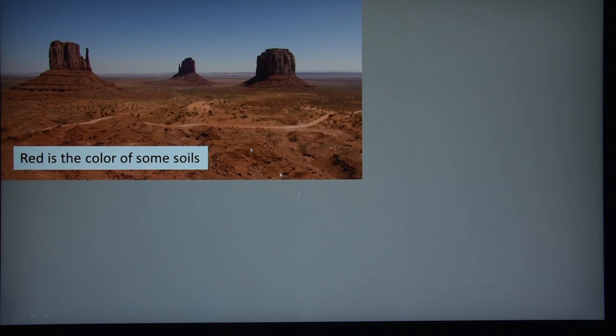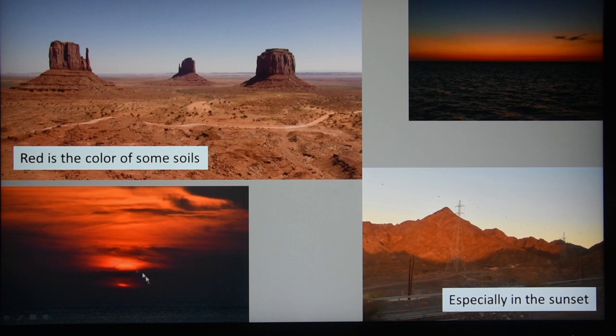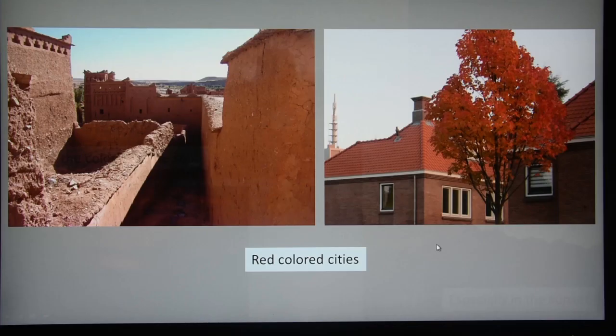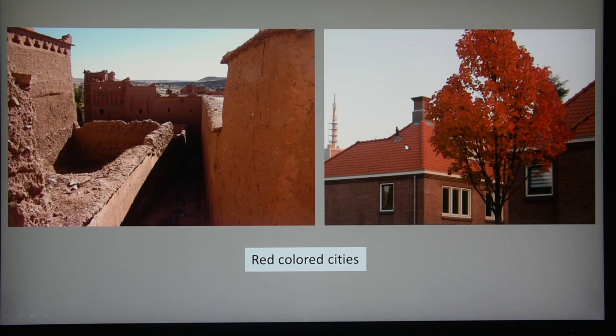Also the soil — you can make brown reddish colors from some of the soils. Especially the sunset becomes orange and red, and if you then illuminate the reddish soil with reddish light, you get nicer reddish colors. It's not very strong red — that's something we will talk about later. Here again these red clay villages in Morocco, or the bricks and roof tiles that some people know from their own city.